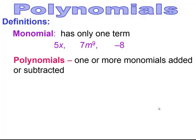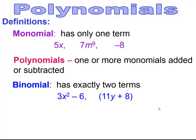Polynomials are made up of one or more monomials, added or subtracted. A special kind of polynomial is called a binomial, and that is when you have exactly two terms. Binomials are sometimes written without parentheses and sometimes with parentheses.